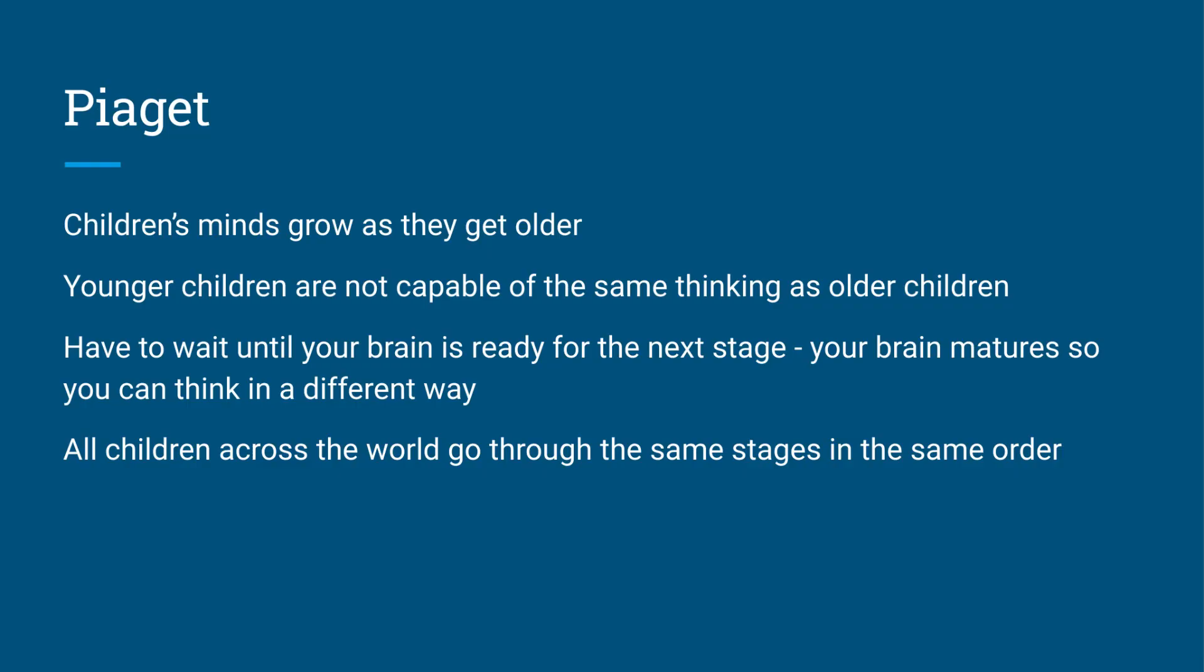According to Piaget, all children across the world will go through the same stages in the same order. Everyone will go through these four stages in the same order. They may do it at different rates, but they should all go through it in the same order.